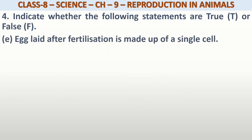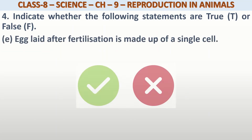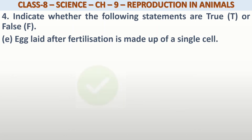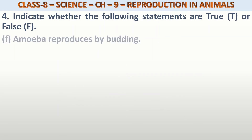Egg laid after fertilization is made up of a single cell. Fertilization के बाद जो egg होती है, वो एक single cell से बनी होती है। Yes, that is true. क्योंकि वो fertilized egg है — fertilized egg is called a zygote, and zygote is a single cell.